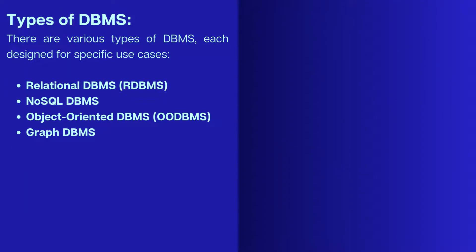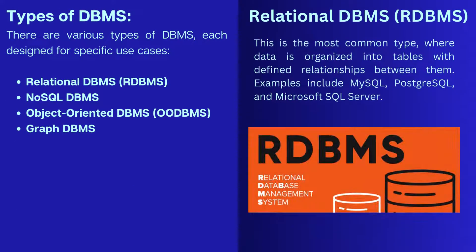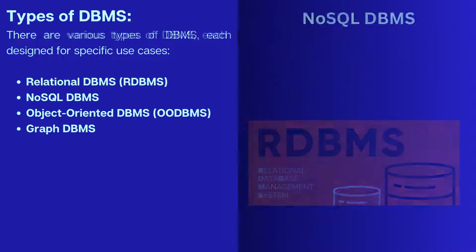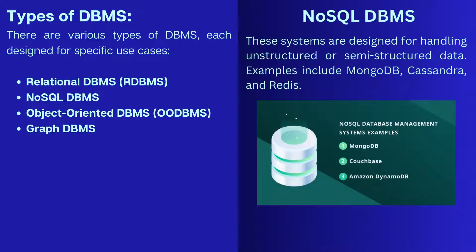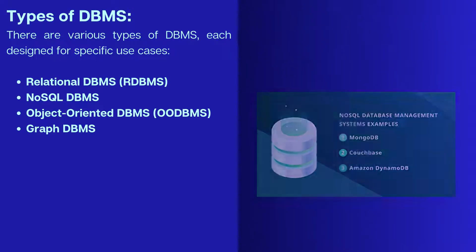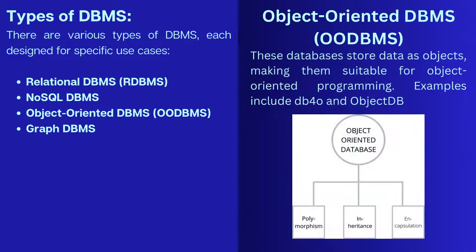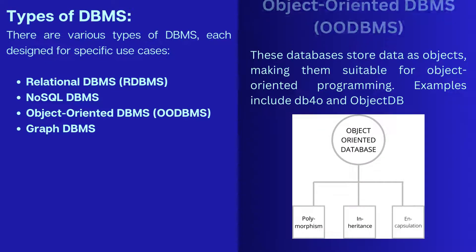Types of DBMS: Relational DBMS, in which data is organized into tables with defined relationships between them. NoSQL DBMS, these systems are designed for handling unstructured or semi-structured data. Object-oriented DBMS, these databases store data as objects, making them suitable for object-oriented programming.